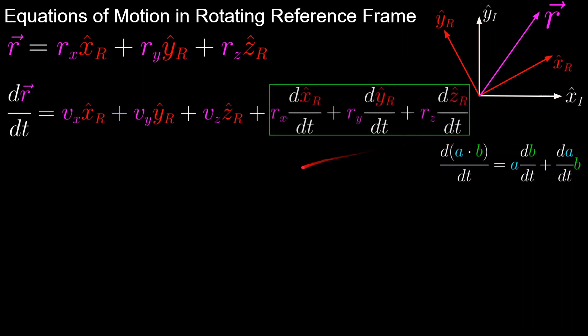But in the case of rotating reference frames, the unit vectors are themselves changing, so we must take those derivatives into account. In the next slide, we're going to focus on just this term in the green box.